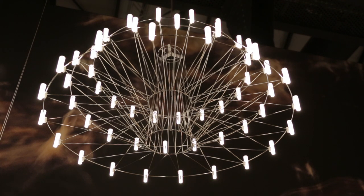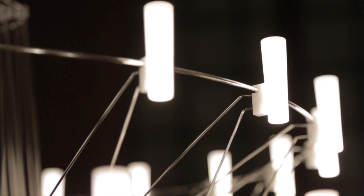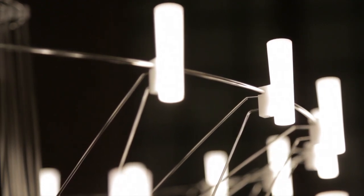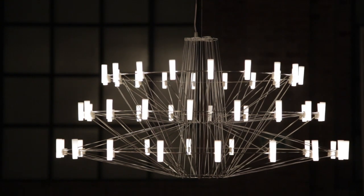There's 54 LEDs. Each one of them is connected to two wires. One is positive, one is negative. And those wires create the structure and the shape of the lamp itself.